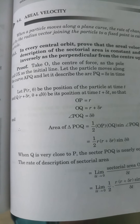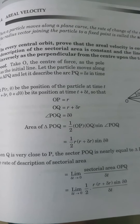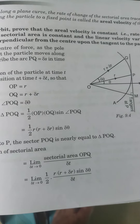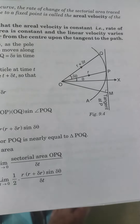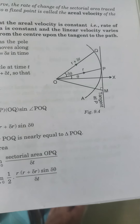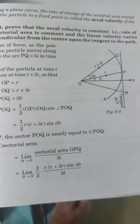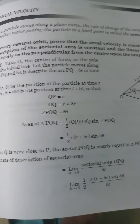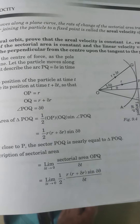When Q is very close to P, the sector POQ is nearly equal to triangle POQ. So we can approximate the sectorial area by the triangular area in the limiting process.